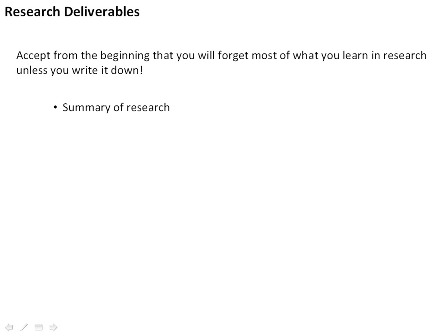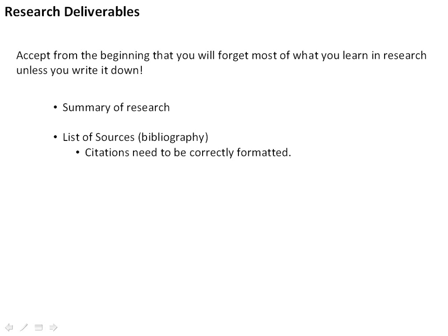One way you can do this is to simply summarize your research — write a couple of pages about it, which is very useful to include in a report. We must also deliver our research through a list of sources or bibliography. Your technical writing course will teach you how to correctly format citations, which avoids the problem of plagiarism — representing somebody else's ideas as your own. You need to be ethical and honest, and listing sources helps you do this.